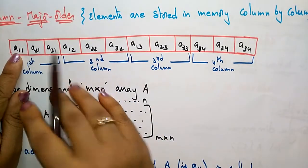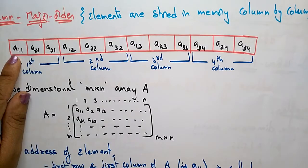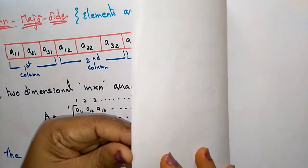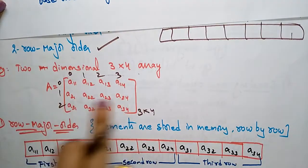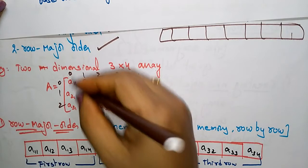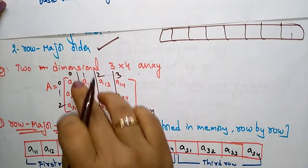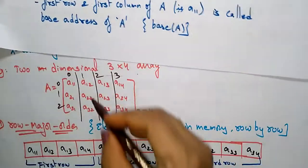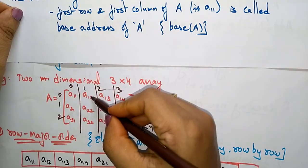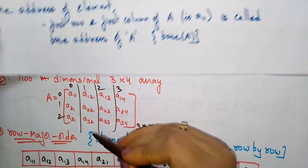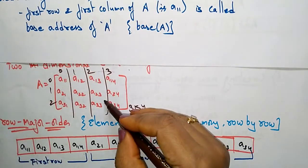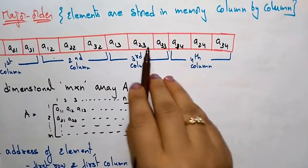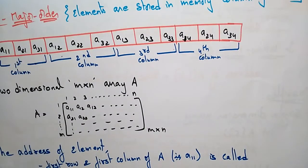Let's see the same example for column major order. In row major order it stores first row, second row, third row. In column major order it takes a[1][1], a[2][1], a[3][1] — the entire first column first. Next it stores the second column: a[1][2], a[2][2], a[3][2]. Then a[1][3], a[2][3], a[3][3], and finally the fourth column. This is column major order.